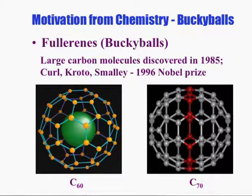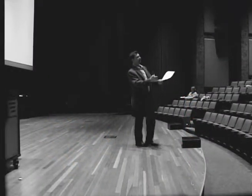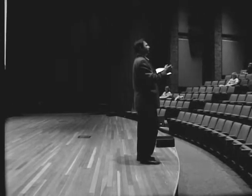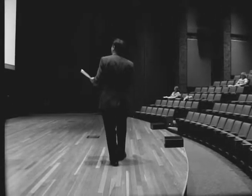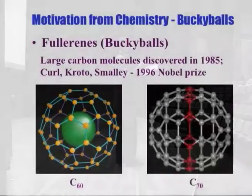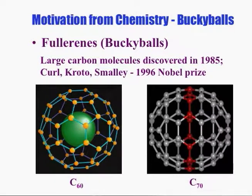What's the motivation from chemistry? This was an interesting problem and a lot of mathematicians worked on it — not too many actually. But then everything exploded. It was in 1985 when the fullerenes, the buckyballs, were discovered. Fullerenes are large, stable carbon molecules — a brand new form of carbon. We know diamond and we know graphite; fullerenes are the third stable form in nature, and they were discovered in 1985.